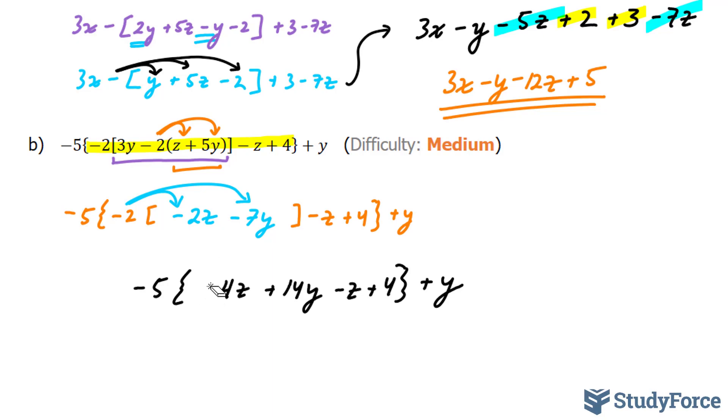You don't need this plus at the front. This and this can be combined. If you combine them, you end up with 3z.